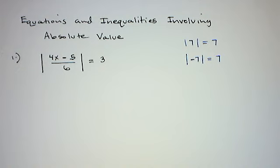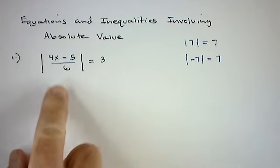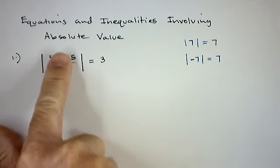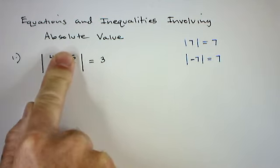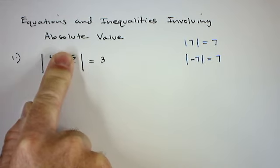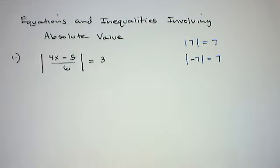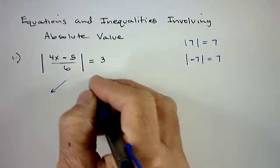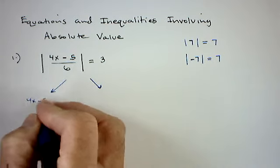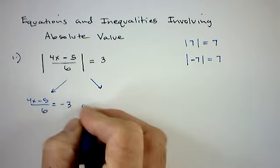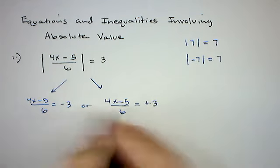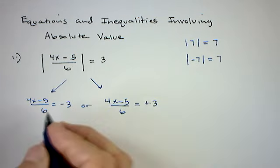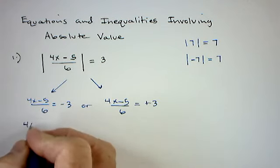For these types of problems I use what I call the cover-up method. You've got a bunch of stuff inside the absolute value, so just cover it up temporarily and ask yourself: what numbers could be behind my finger and make that a true equation? Three and negative three would both work, since the absolute value of three and the absolute value of negative three both equal three. So whatever was behind my finger — which was (4x − 5)/6 — could either equal negative three or positive three.